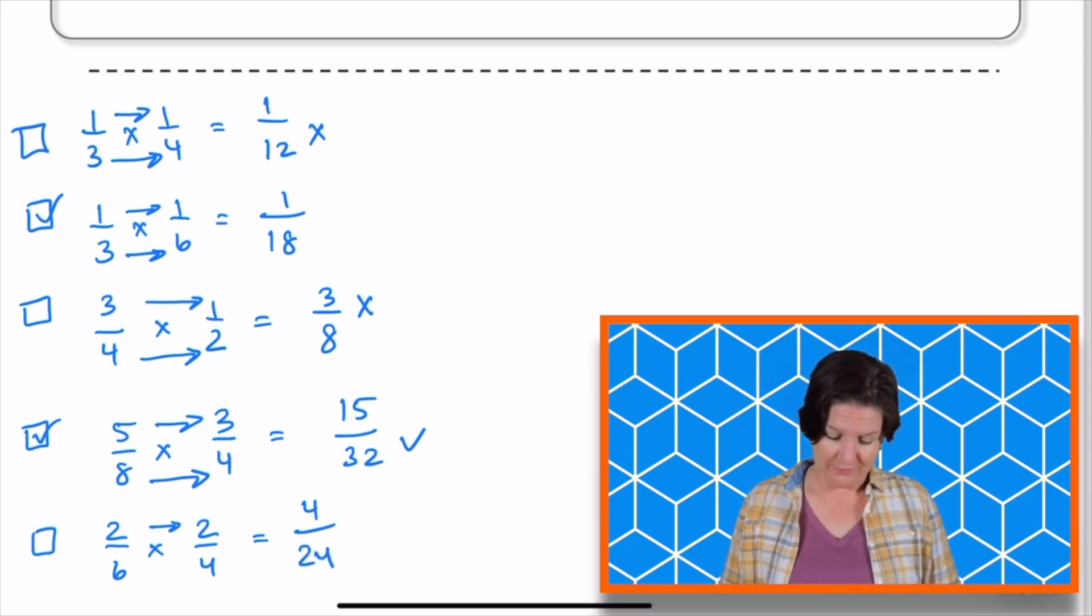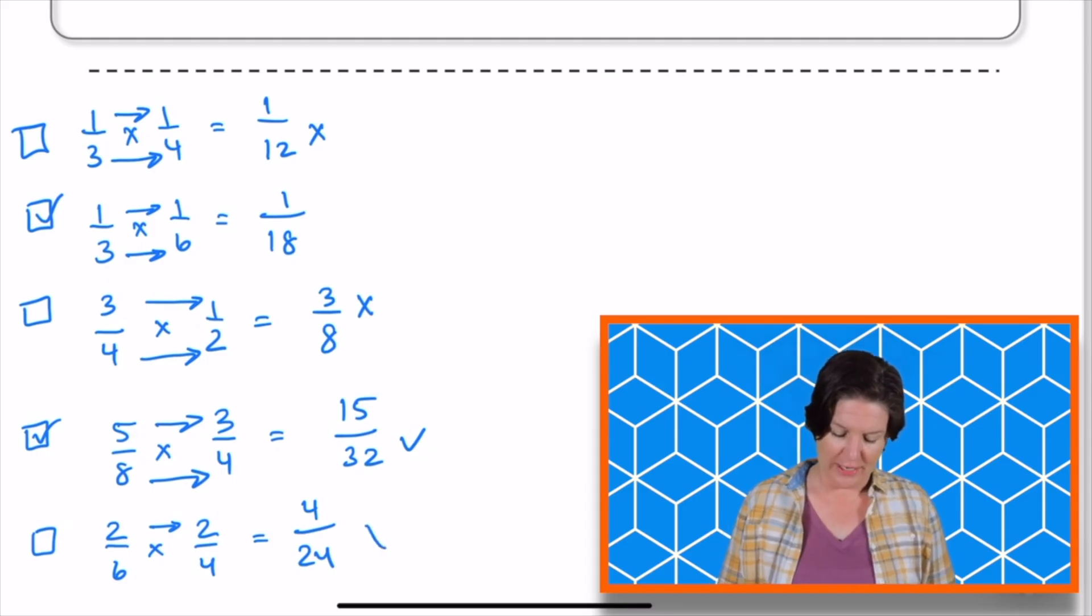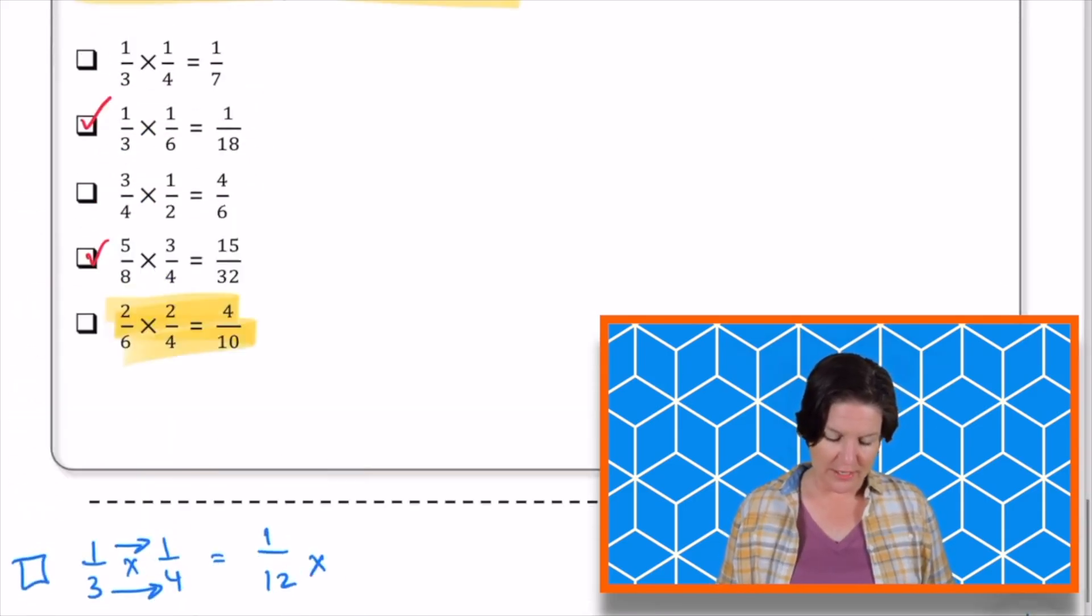4, and 6 times 4 equals what? 24, right? So it would be 4/24, not 4/10. So we cannot mark that one. So those are our two answers right up there.